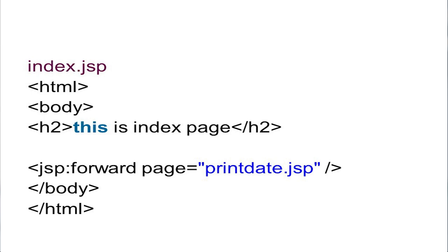You can see the first JSP action tag — JSP colon forward. This is the index.JSP page. The program is started with the HTML body and then heading: 'This is index page.' On line five, JSP colon forward page equals to printdate.JSP, meaning we should already have the printdate.JSP. As index.JSP runs, it will forward to printdate.JSP. The program closes with slash body and slash HTML.